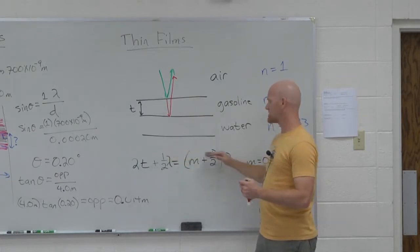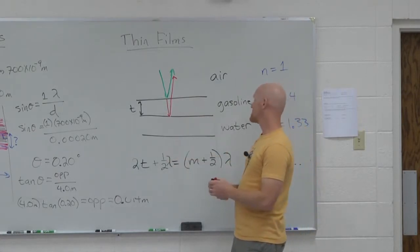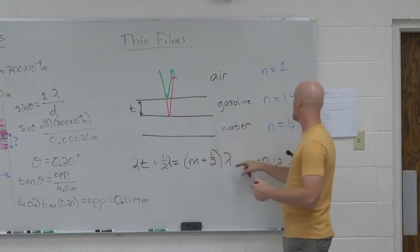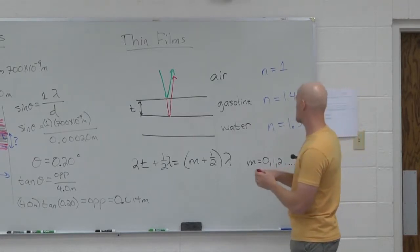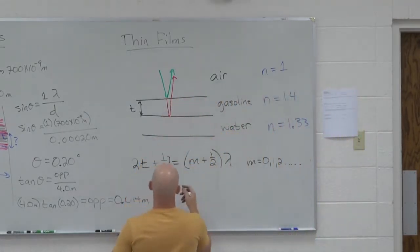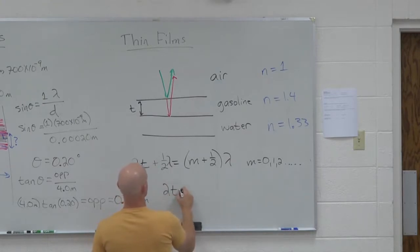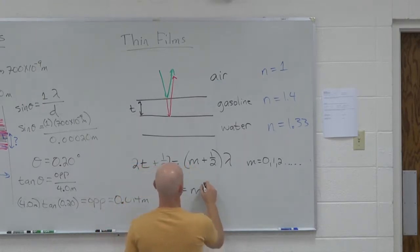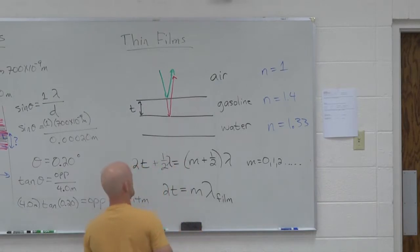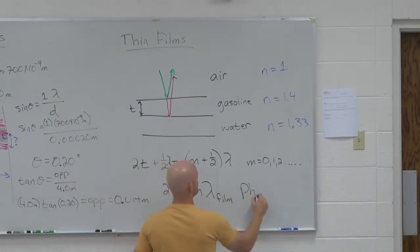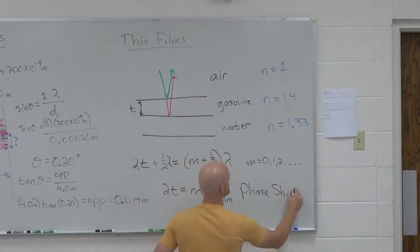We can rearrange this a little bit — and that is on your sheet. If you subtract this half wavelength after distributing through, you find that if there is a phase shift between the reflected rays, then instead 2t equals m times lambda. This is the equation when there is a phase shift between the two reflected beams relative to each other.